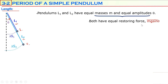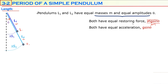If we divide the restoring force by mass, we get the acceleration of each pendulum. Because mass simplifies according to Newton's second law — F over m — even if their masses were different, both pendulums would have the same acceleration, g sine theta. So the first and second pendulums both have the same acceleration.